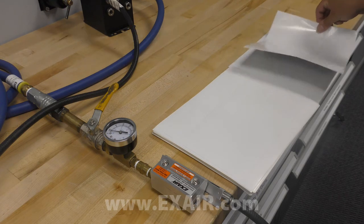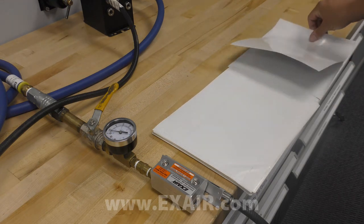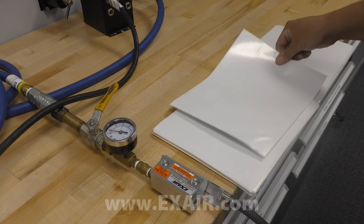With the super ion air knife in place, one sheet is able to easily be fed at a time without pulling in multiple at once.